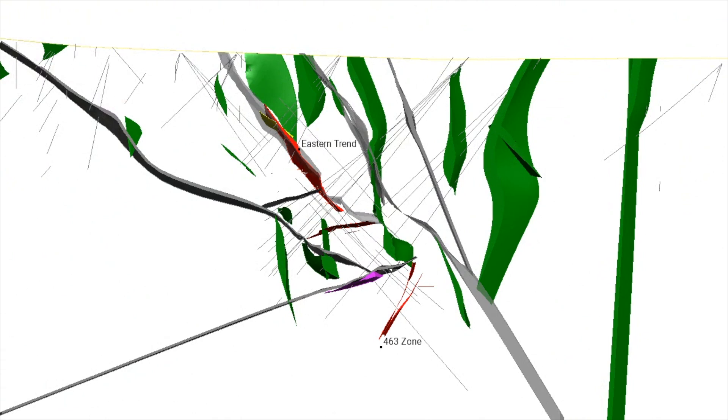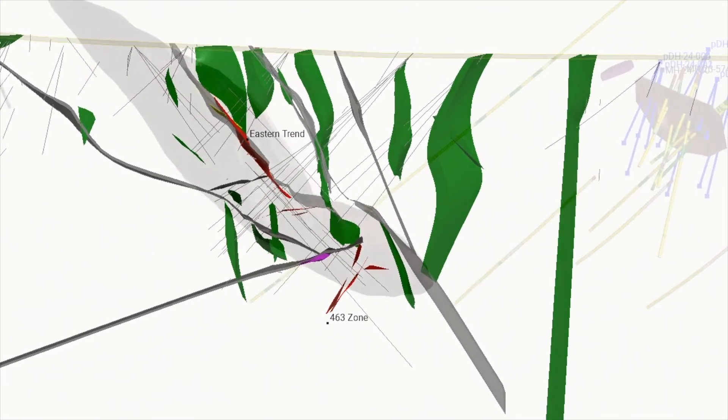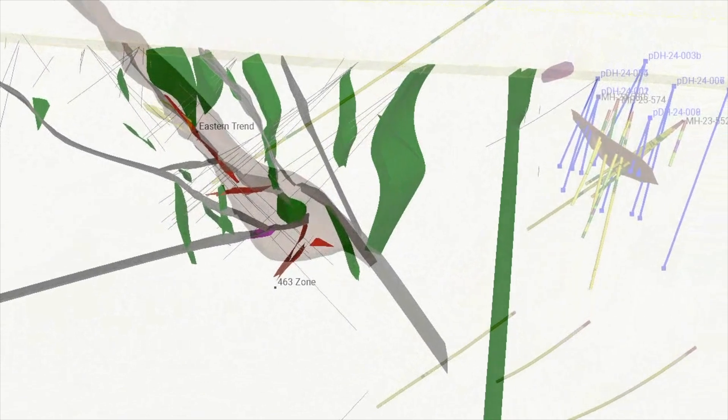During 2023 while following up on a recent IP survey and a nearby historic geochem assay we discovered our 552 zone which is our most easterly zone of gold mineralization seen to date.